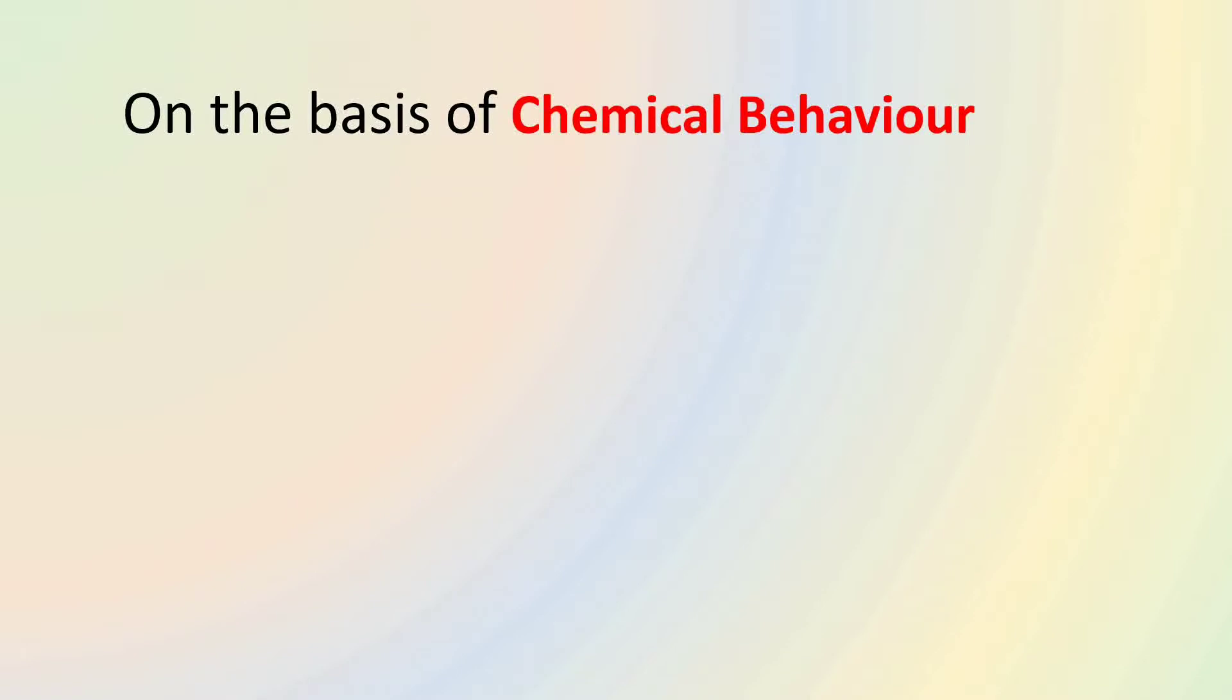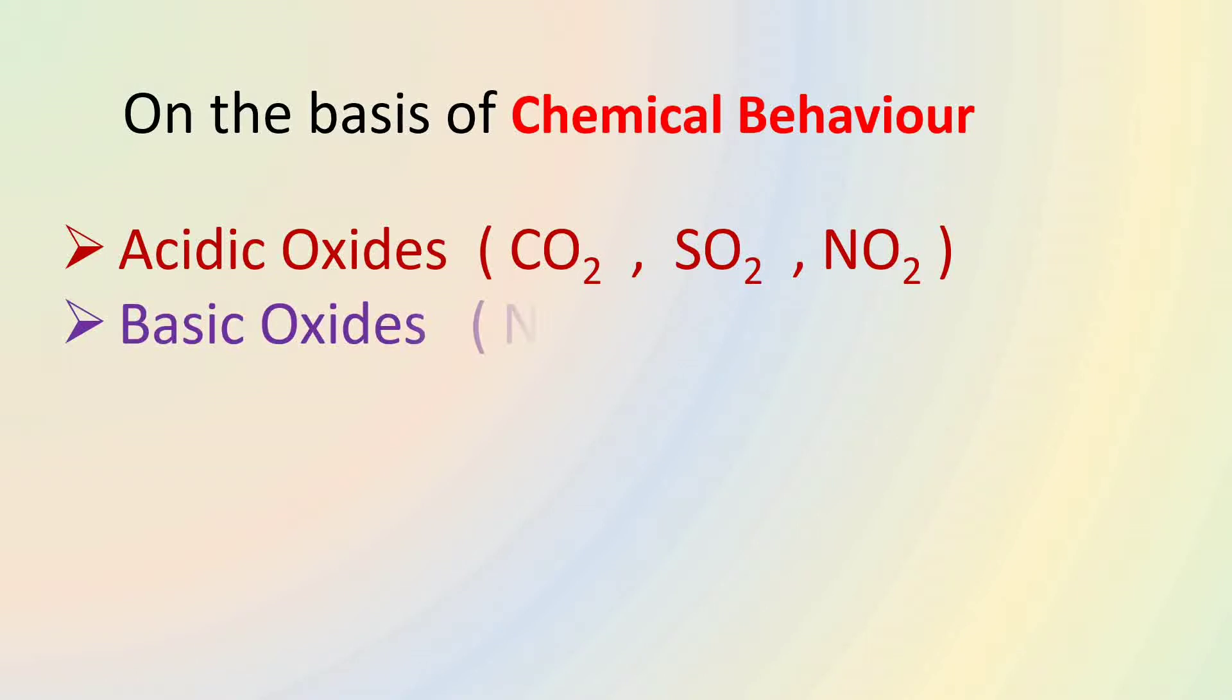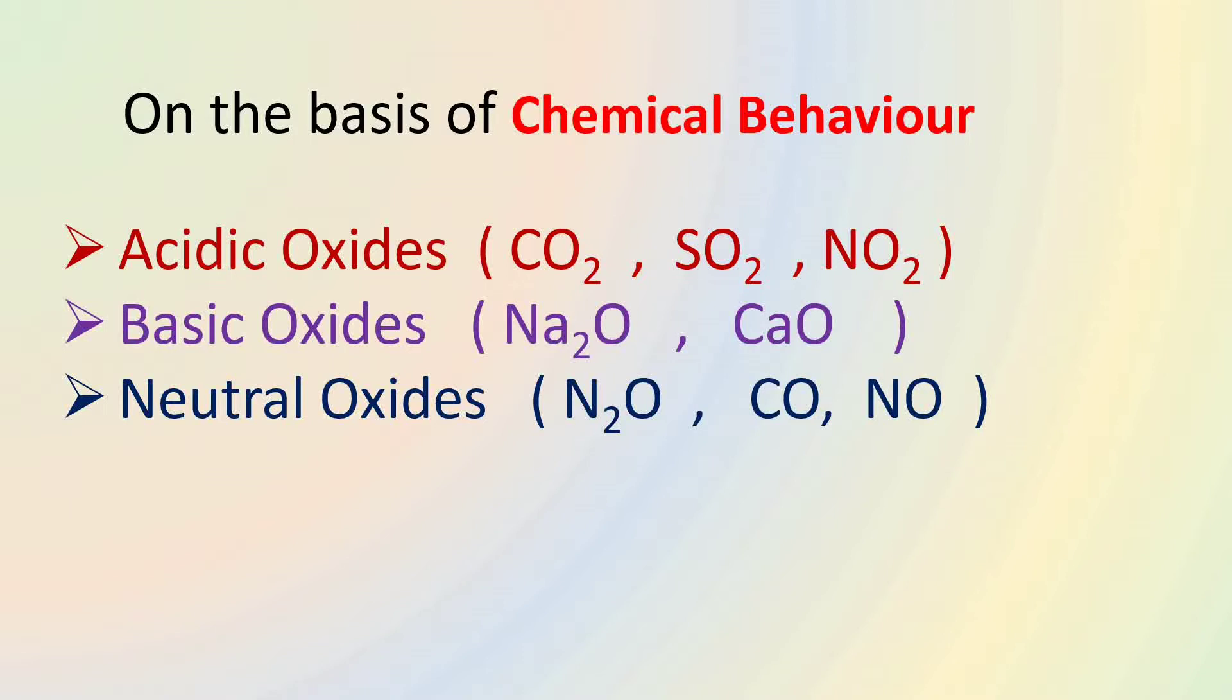Similarly, on the basis of chemical behavior, oxides can be classified as acidic oxide, basic oxides, neutral oxides and amphoteric oxides. Acidic oxides combine with water to give acids, for example CO2, SO2, NO2. Basic oxides give bases with water, for example Na2O, CaO. Neutral oxides give neither acid nor bases with water, for example CO, H2O, N2O, NO. And amphoteric oxides can react with both acids and bases. Amphoteric oxides are formed by amphoteric metals like aluminum, beryllium, zinc. The examples of amphoteric oxides include Al2O3, ZnO.